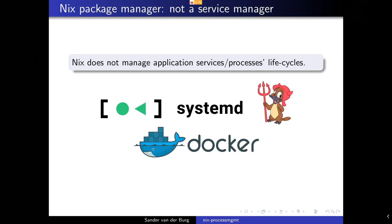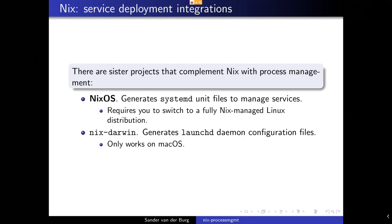What I also typically do is explain newcomers that there are sister projects that can complement Nix with all kinds of other deployment features, such as process management. The most famous project is NixOS. NixOS can generate systemd unit files with the package manager, and then systemd is responsible for managing the lifecycle of these processes. But there's one catch: if you want to use NixOS, that basically means you're forced to adopt a fully Nix-managed Linux distribution. And if you want to use another operating system, or if you're not familiar with Nix yet, this is typically a pain. For seasoned users like me, this is not a big deal — it's actually what I want — but it's not always an option to use NixOS.